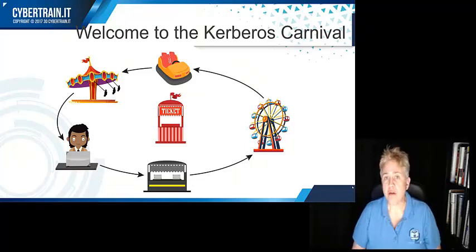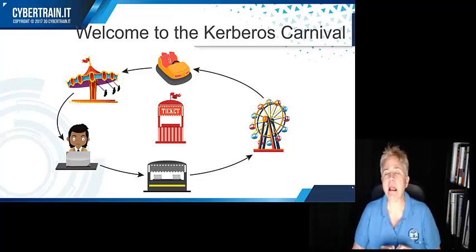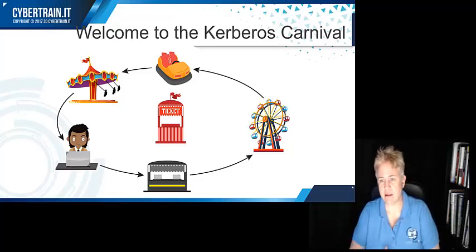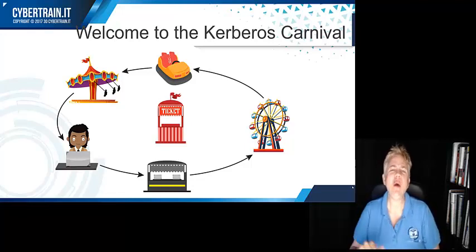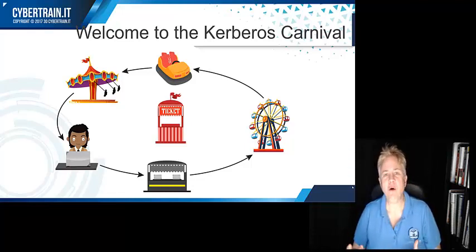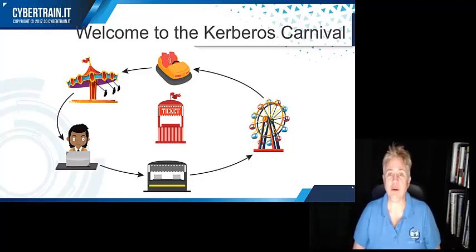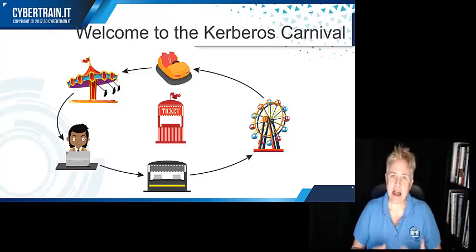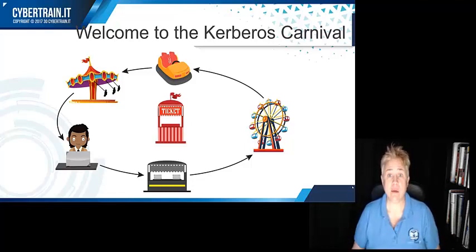Before I was old enough to go to the carnival alone, I went with my mom. My mother is a lovely woman, but she's a little tight with a penny. When we went to the carnival and I wanted four tickets to ride the Ferris wheel, she gave me four sad little tickets. I rode the Ferris wheel, but I couldn't ride it again on the same tickets. For bumper cars, I get three tickets. For the swings, back to the ticket booth. How many times through admission for the wrist strap? Once. How many times to the ticket booth? Once per ride. That's Kerberos.